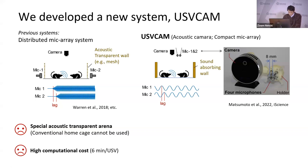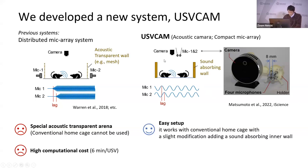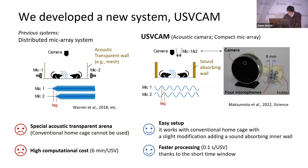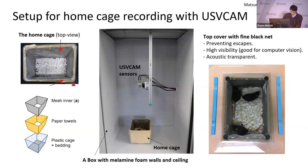Our new system is named USV-Cam. We use a compact array of four microphones next to the camera. Because we have a single sensor assembly on the top of the cage, it can be applied to different environments including the home cage, with a slight modification to prevent sound reflection from the walls. Another advantage is faster processing — it takes 0.1 seconds per USV on average with a consumer PC, which is more than a thousand times faster than the previous system. The recording setup uses a home cage lightly customized to prevent sound reflection, placed under the sensor.